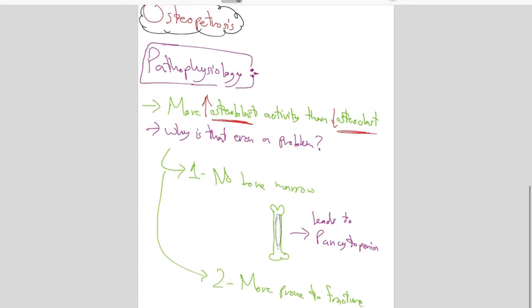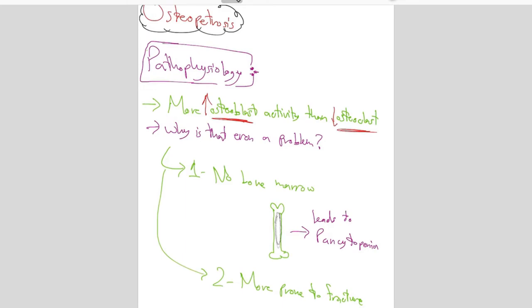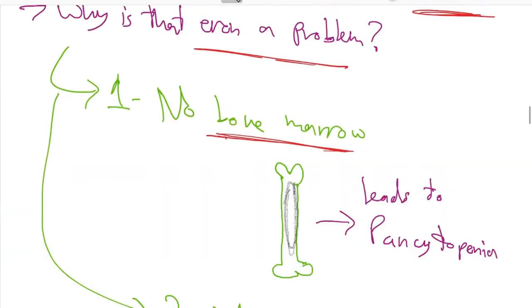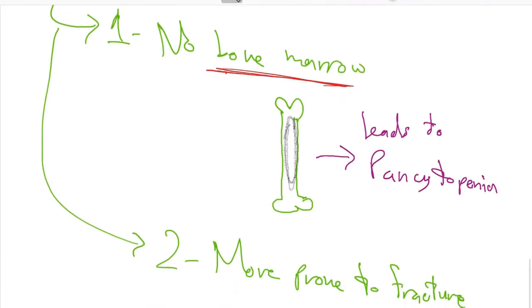This is something you need to understand about osteopetrosis. So how does this cause a problem? One of the main problems it causes is there will be no bone marrow. This is kind of intuitive. If we said that there's going to be a lot of formation of bone, the bone marrow in the middle, which is just a hollow space with cells that forms the blood cells, will be blocked off.